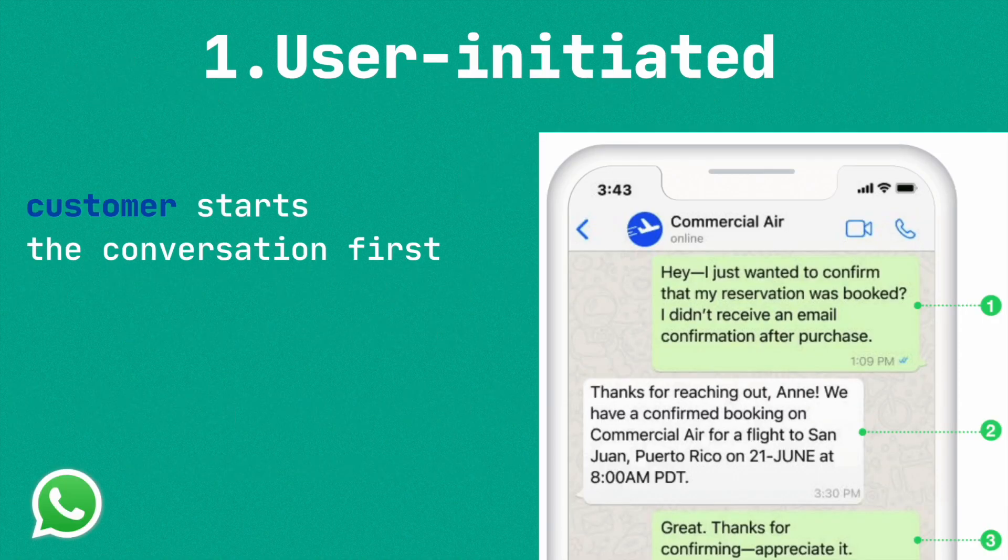You can see on the right side — CommercialIR is using the WhatsApp Cloud API to maintain good service with their customers. Here, the user initiated the conversation. The customer is asking details about their booking — that first message from the customer is called a user-initiated message.